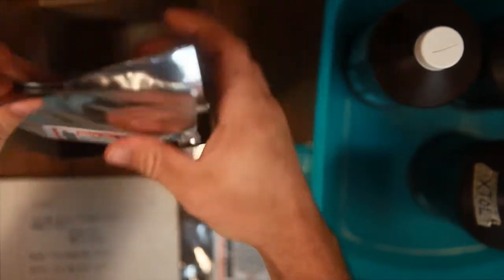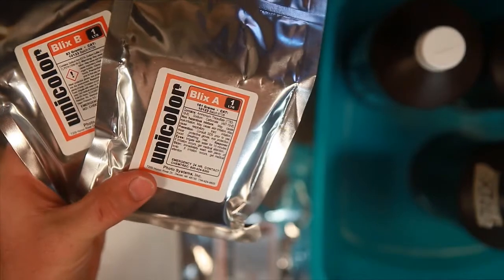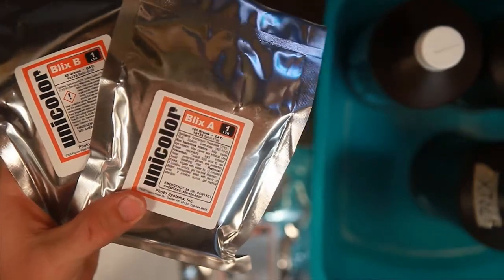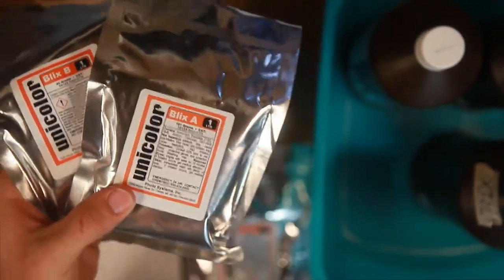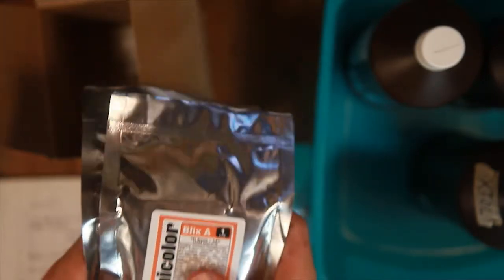Then we have a blix which is a bleach and a fixer. We have a part A and B to that, similar to how our developer for black and white film works where you have two separate parts that are mixed together and that's what activates them.